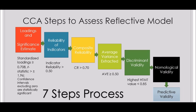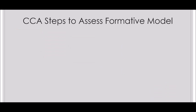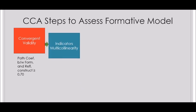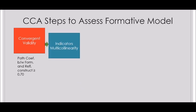Now I'll explain the CCA steps to assess a formative model. The first step is to establish evidence of convergent validity — the path coefficient between the formative construct and a reflective construct should be greater than or equal to 0.70. If you get a value of 0.70 or greater, this provides evidence of convergent validity. The second step is indicators multicollinearity: calculate the variance inflation factor — VIF should be less than or equal to 3.